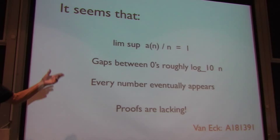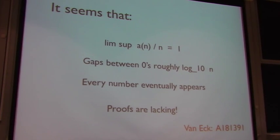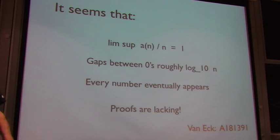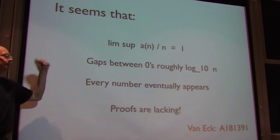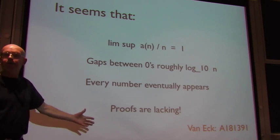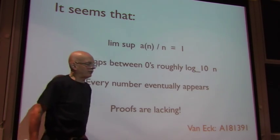And there'll be a run of things going up, and then it'll drop down to zero again when we get a new term, and then it goes up. It looks like the lim sup, the upper envelope, is about n, roughly. I went out to a million terms, and I was getting numbers that were close to a million. It looks like the gaps between the zeros are roughly log to the base 10 of n. That's a very crude figure. And it looks like every number eventually appears, but we don't have proofs for any of these observations.